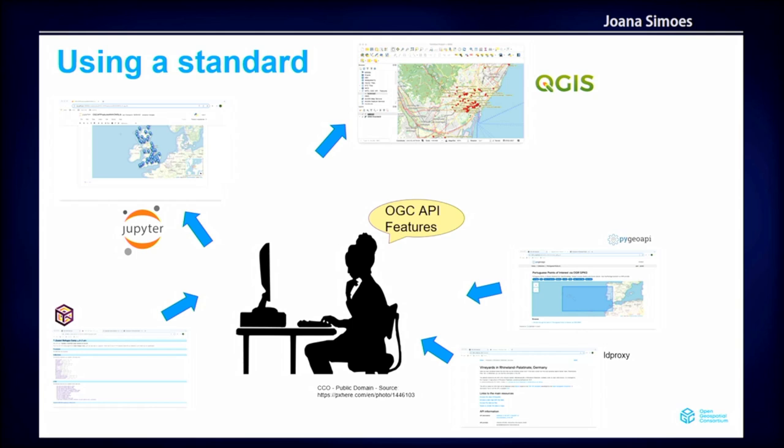So this would be the ideal world. I want to connect to a server and it doesn't matter what the software is — it could be PyGeoAPI, it could be LD proxy, or something else. And then I want to use a client to connect to the server; the client could be a Jupyter notebook or QGIS. As a user, I should not care about these things. I should not be forced to use a specific client or connect to a specific server because all of them are using a standard. This is the final goal of interoperability, and in this example the standard is OGC API features.